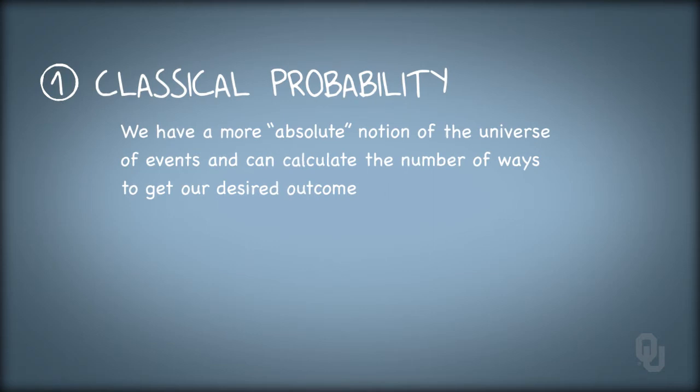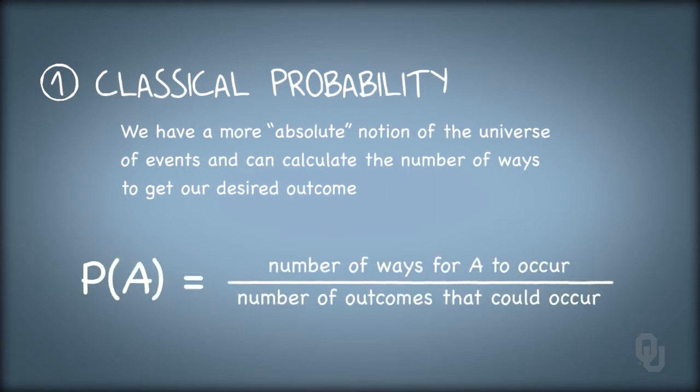If we can describe event A with classical probability, then the probability of event A is the number of ways for A to occur divided by the total number of outcomes that could possibly occur.